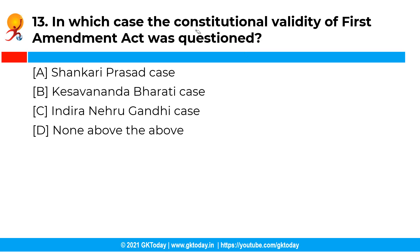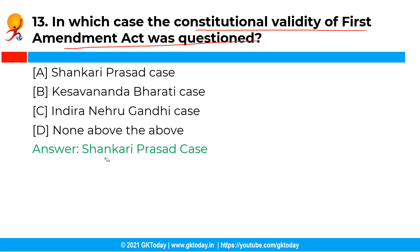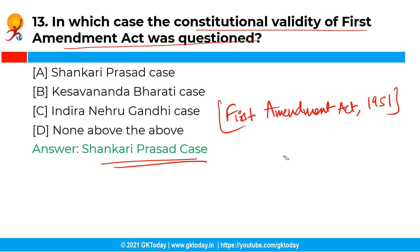The next question is: in which case was the constitutional validity of the First Amendment Act questioned? The correct answer is option A — the Shankari Prasad case of 1951. The question of whether fundamental rights can be amended by the parliament came for consideration of the Supreme Court within a year of the constitution coming into force, and the constitutional validity of the First Amendment Act of 1951, which curtailed the right to property, was challenged in the Shankari Prasad case of 1951.